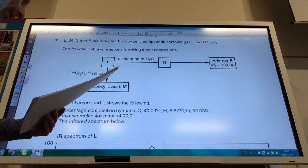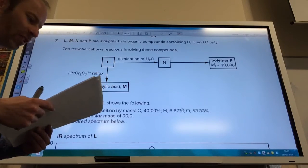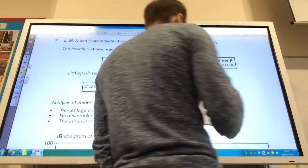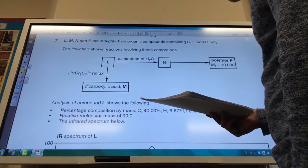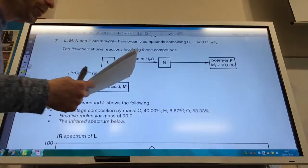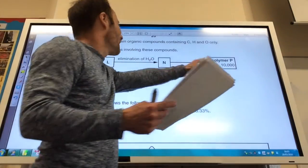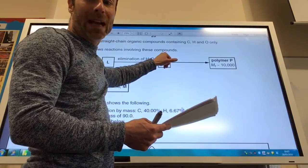Okay, so question seven, the final one. L, M, N and P are straight chain organic compounds. The flow chart shows some reactions. I've got a polymer being formed here, so what must N be? N is going to be an alkene.